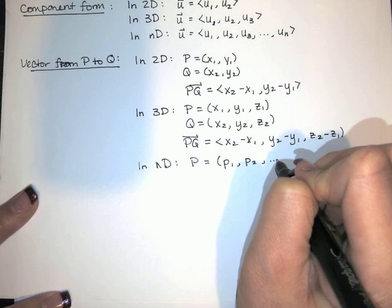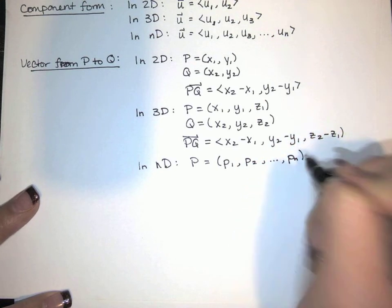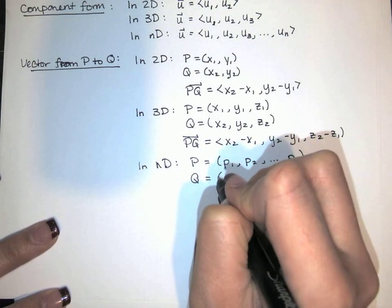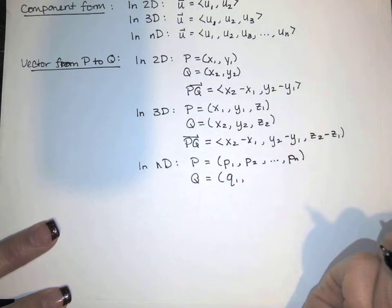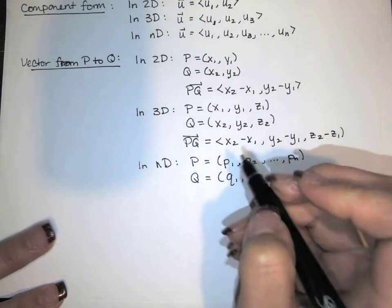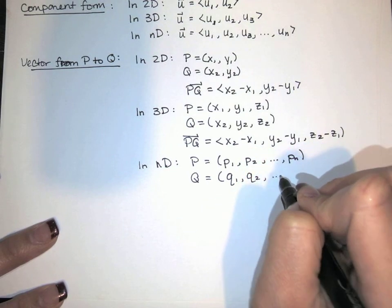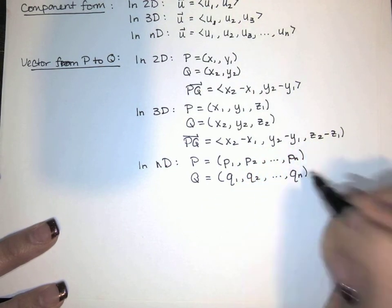It has n components, and q has components, or excuse me, coordinates. These are coordinates of p, not components of p. And q has coordinates q1, q2, all the way through q n.